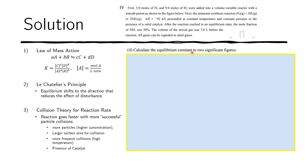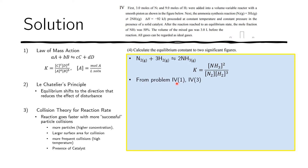Now we will compute the equilibrium constant to two significant figures using the law of mass action. First, we write the equation to know the exponents. For this ammonia synthesis equation, Kc equals the concentration of NH₃ squared, over the concentration of N₂ times the concentration of H₂ cubed. From the previous problems, we know that the amount of ammonia produced is four moles and the final volume is two liters, giving a concentration of 4 moles divided by 2 liters, which is 2 moles per liter.